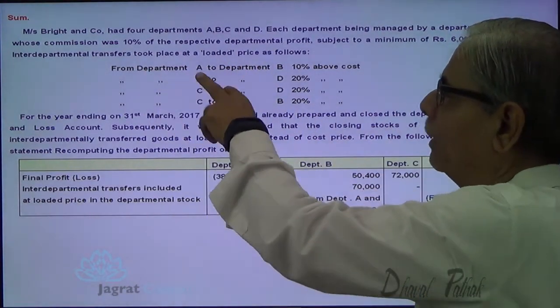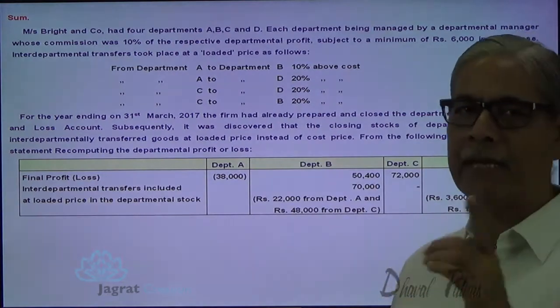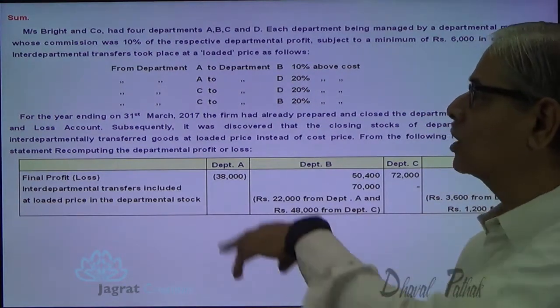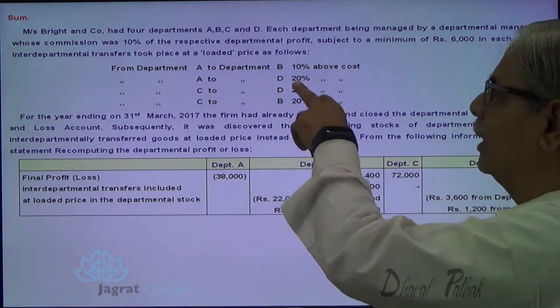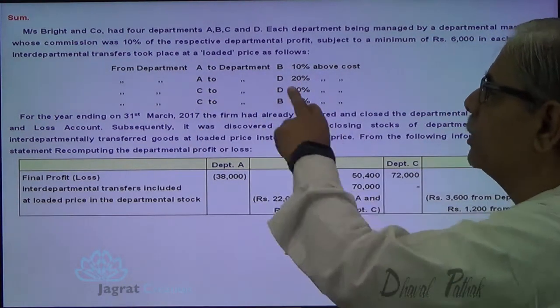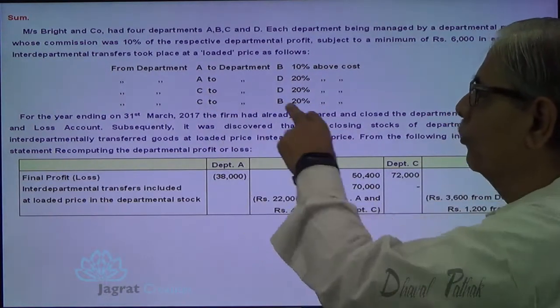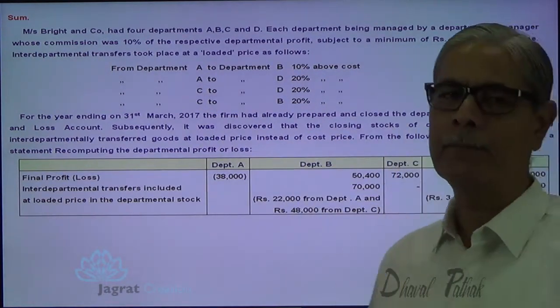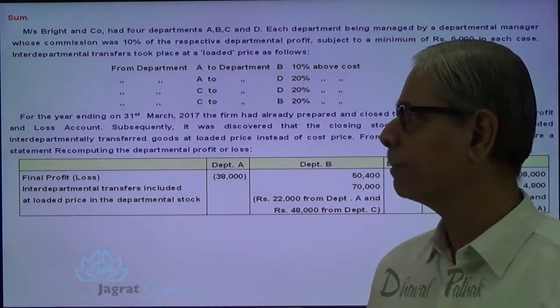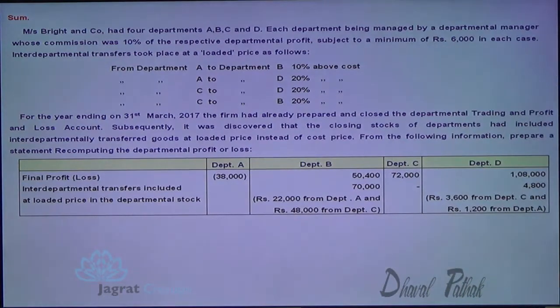From department A to department B, 10% above cost. From A to D, 20% above cost. From C to D, 20% above cost. From C to B, 20% above cost.